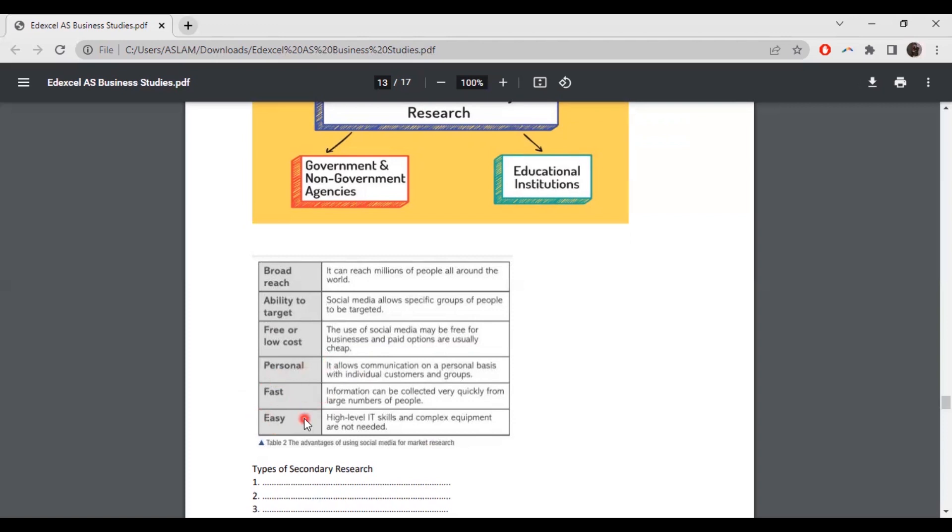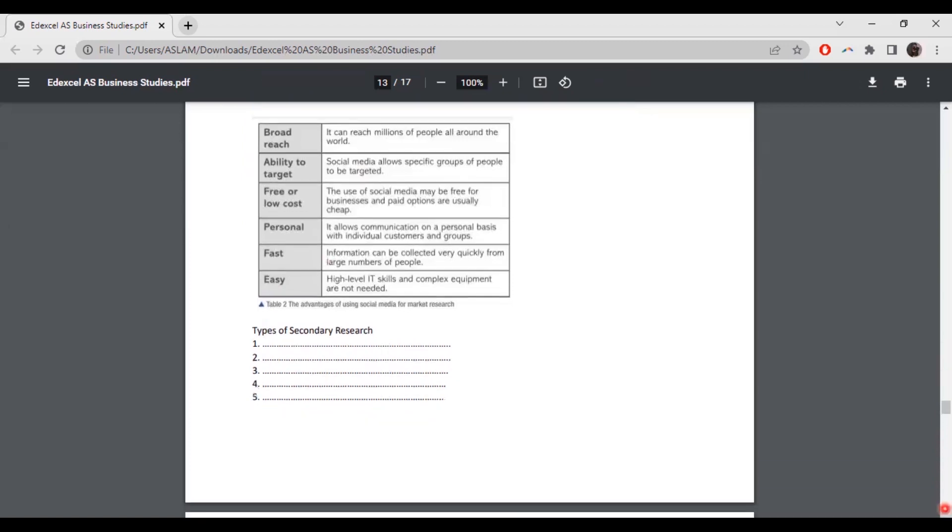Fifth one, fast. Information can be collected very quickly from large numbers of people. We can see because it's already available there. Information can be accessed anytime we want. Easy, high level IT skills and complex equipment are not needed as it's not expensive. It's already available in the internet. If you just click in Google, we can find out what we actually need.